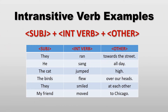Here are some examples of intransitive verbs using the key subject plus verb plus other structure: They ran towards the street. He sang all day. The cat jumped high. The birds flew over our heads. They smiled at each other. My friend moved to Chicago.